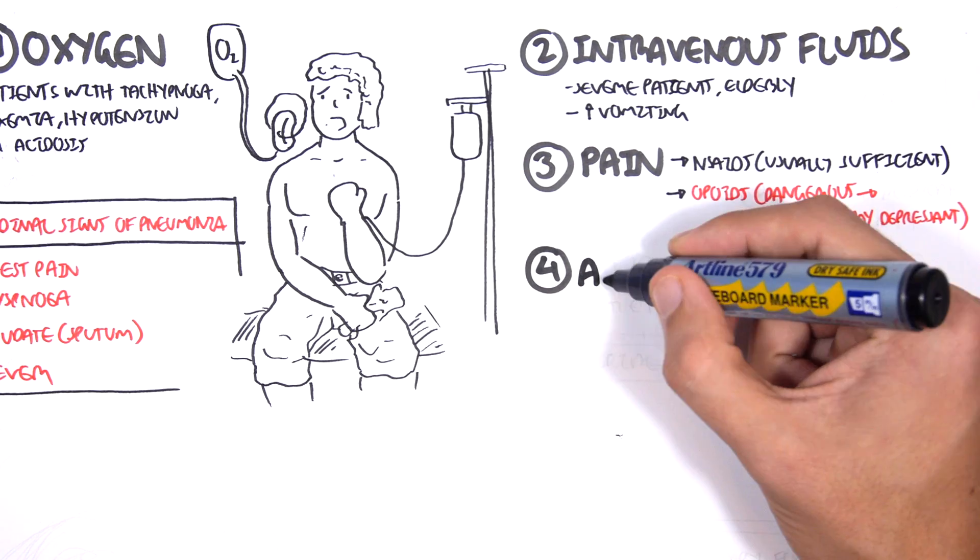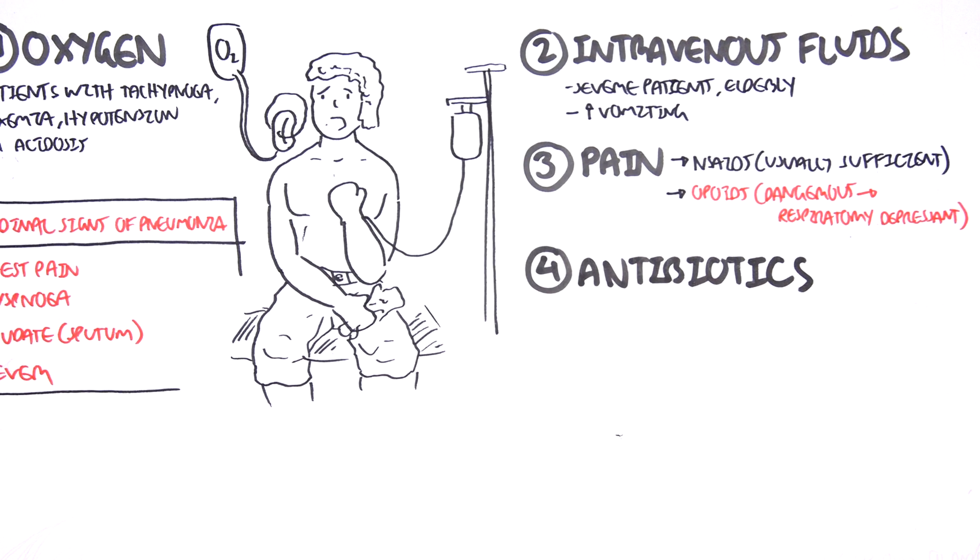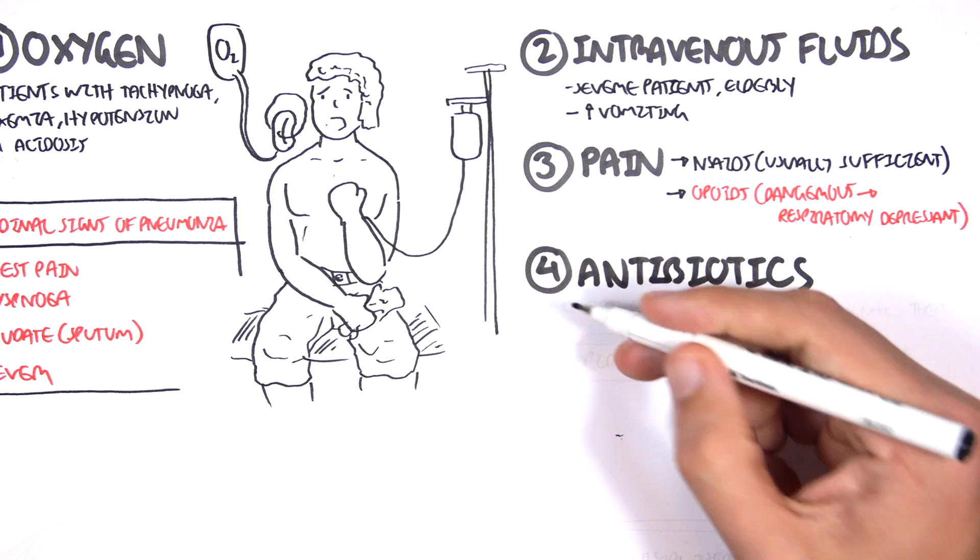Four, use of antibiotics. Use of antibiotics can be complicated. So essentially, you don't know the causative agent, so you have to do empirical therapy.